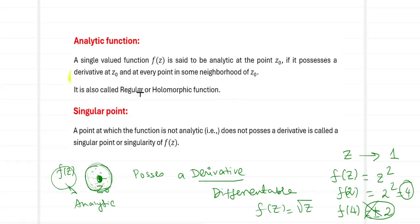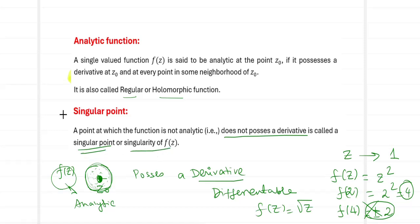What is the converse? If the derivative does not exist at a particular point, then that point is called a singular point or a singularity of f(z). At a singular point, f'(z) does not exist — it effectively goes to infinity.